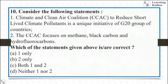Consider the following statements about Climate and Clean Air Coalition (CCAC): (1) CCAC to reduce short-lived climate pollutants is a unique initiative of the G20 group — wrong, it is an initiative of UNEP not G20; (2) CCAC focuses on methane, black carbon, and hydrofluorocarbons — absolutely right. Since statement one is wrong and two is right, the answer is two only.